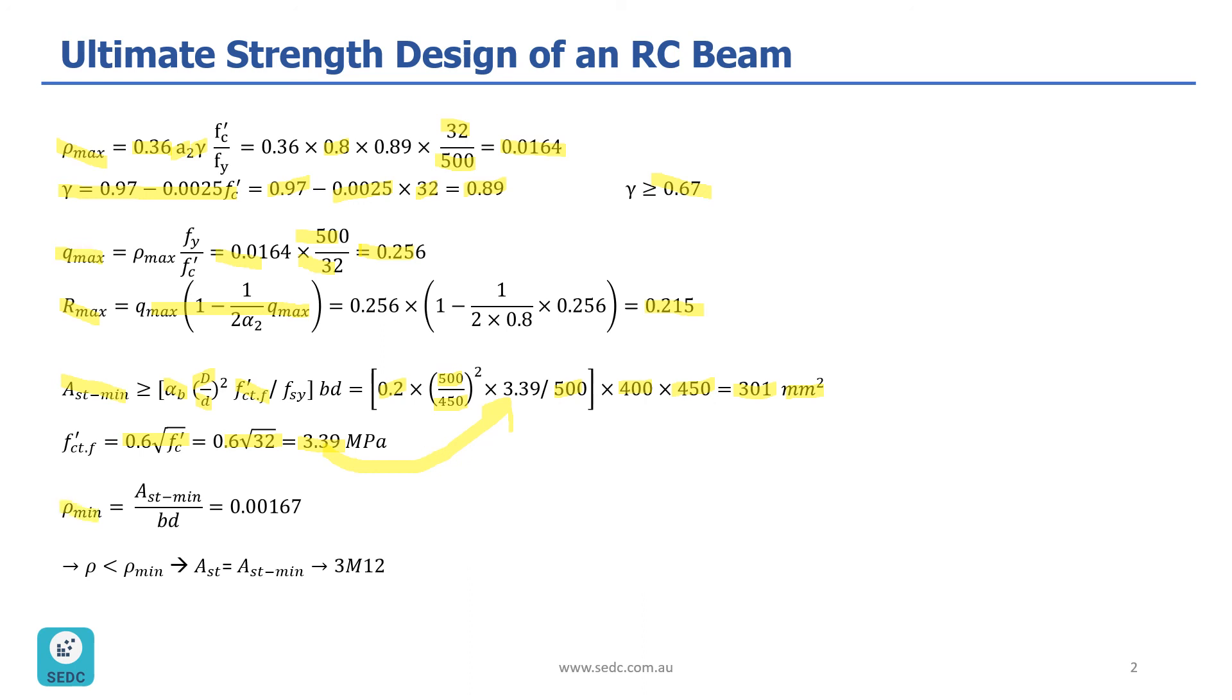And then, Rho min would be AST min divided by BD. So, Rho min would be 0.00167. And now, we just need to compare Rho with Rho min. And because Rho, that was calculated before, is less than Rho min, then our AST or total AST reinforcement in tension would be equal to AST min, which is going to be the minimum reinforcement we can put, 301 square millimeter, would be 3M12.